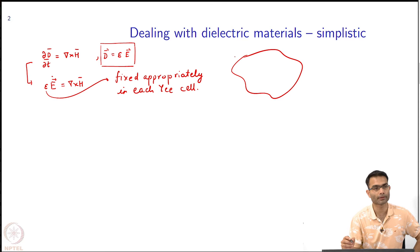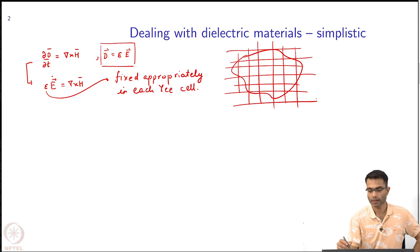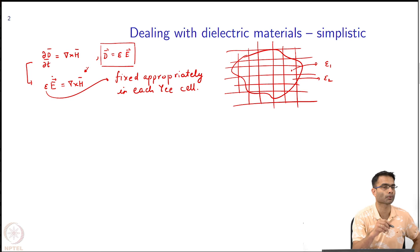Supposing this is your computational domain. Our E cell is going to fracture this whole thing into a square grid. This over here has some epsilon 1. First of all, I do a piecewise constant approximation of epsilon. Wherever there is a square grid I assume the epsilon is constant over there. This is some epsilon 1, this is some epsilon 2, and so on.